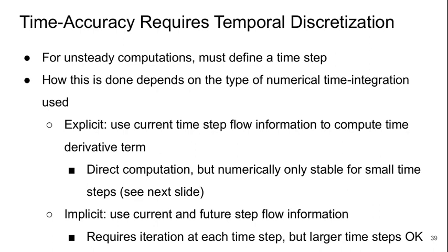The implicit approach uses a combination of current and future step information, so it's iterative — it requires iteration at every time step. But the trade-off is that we can use larger time steps, and typically this implicit approach actually ends up being less expensive.